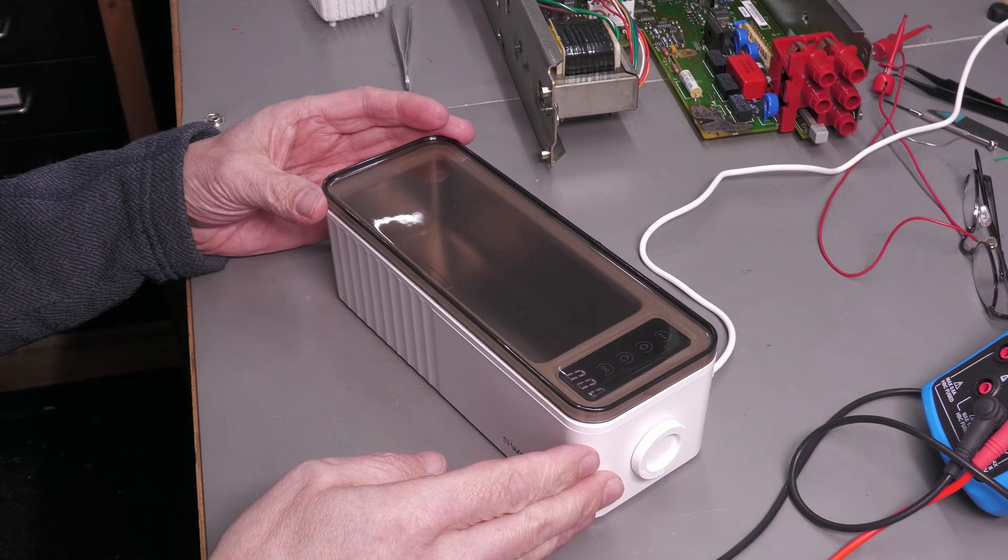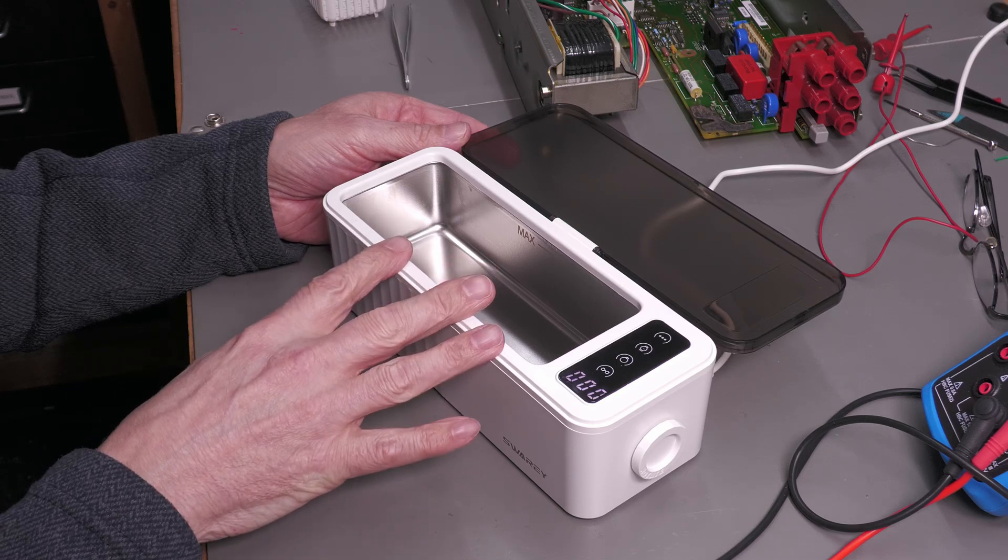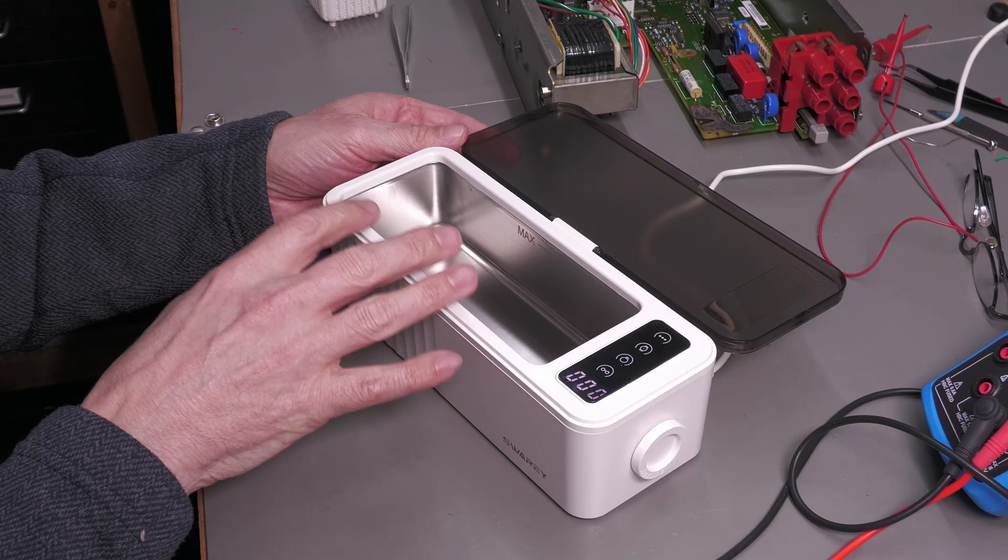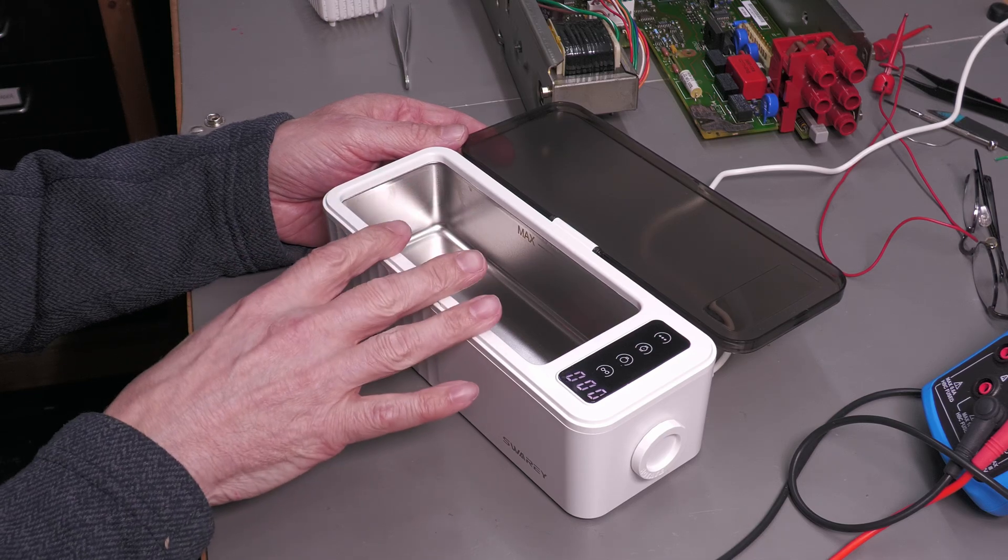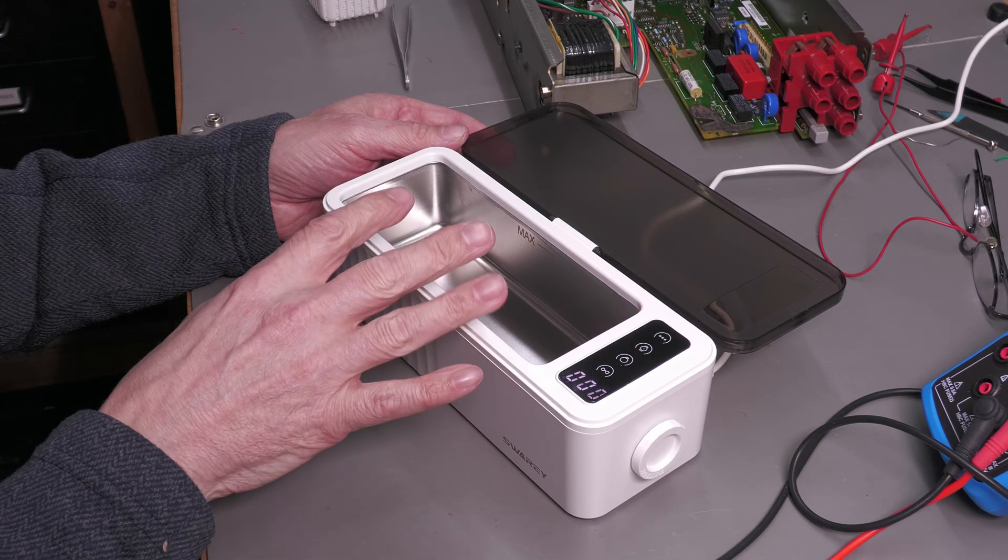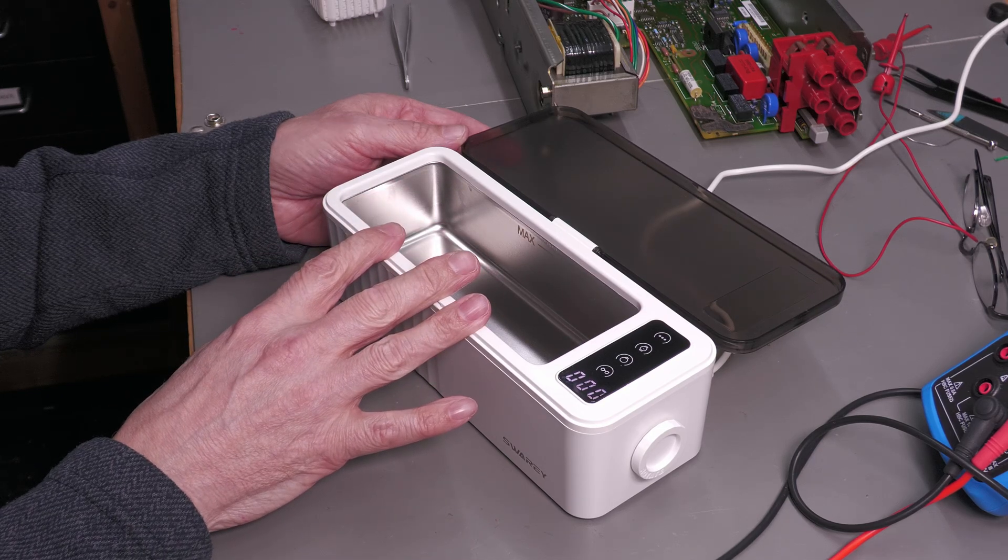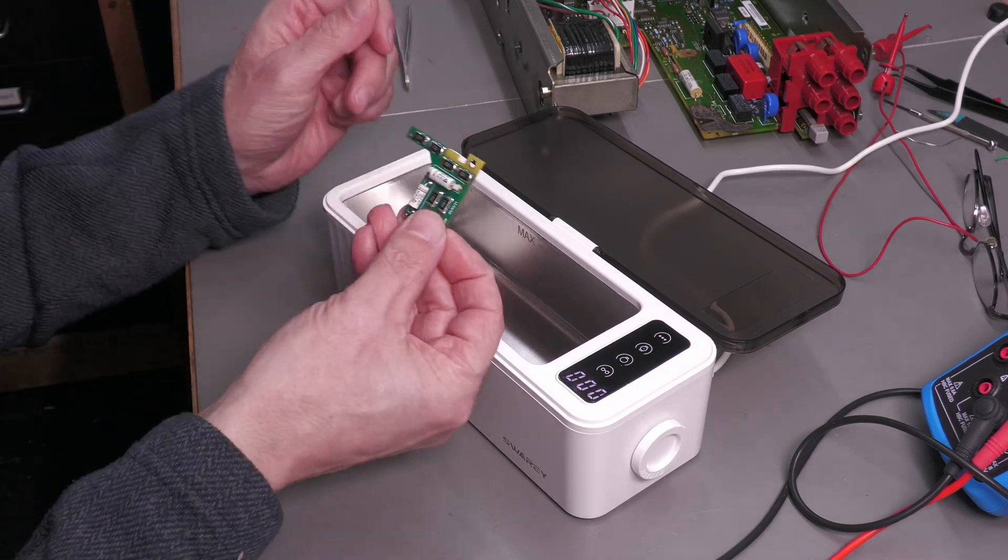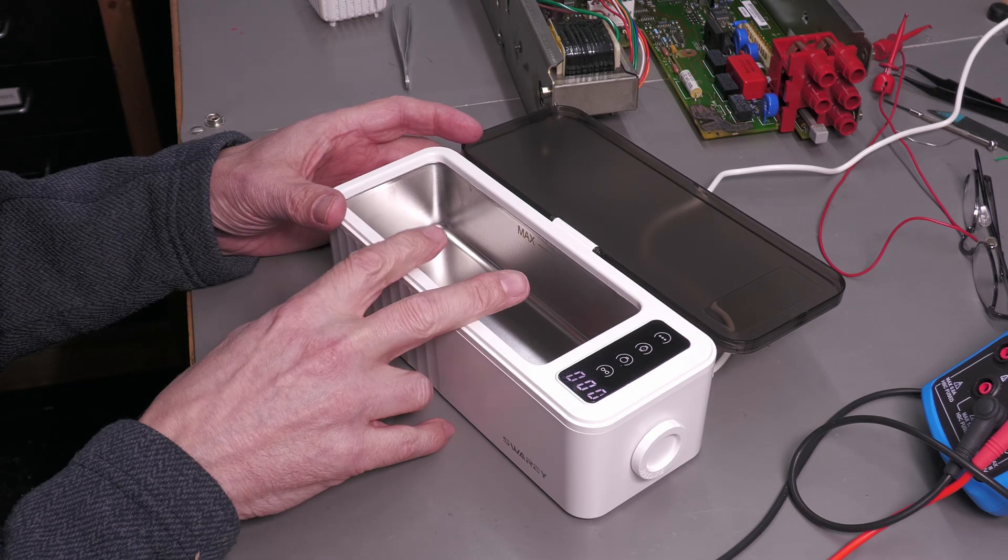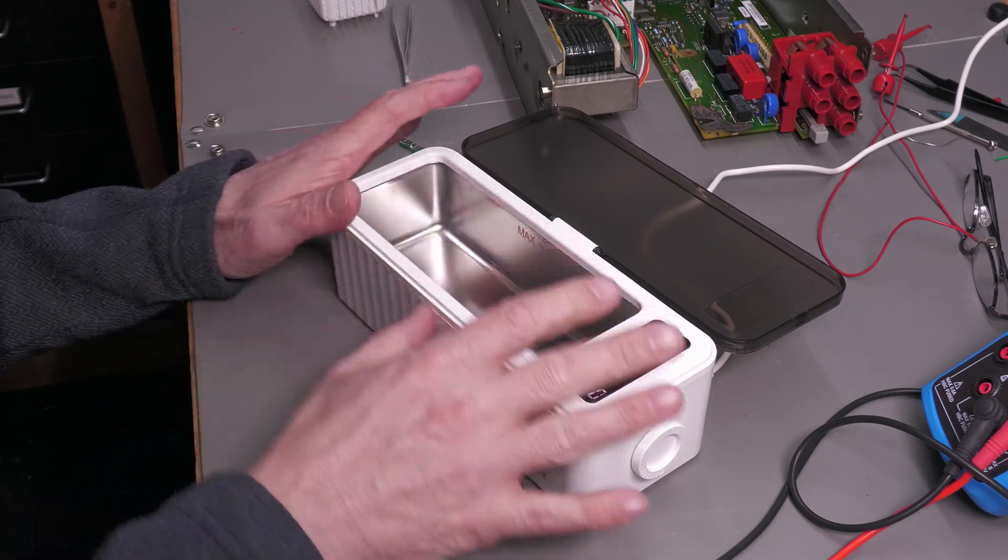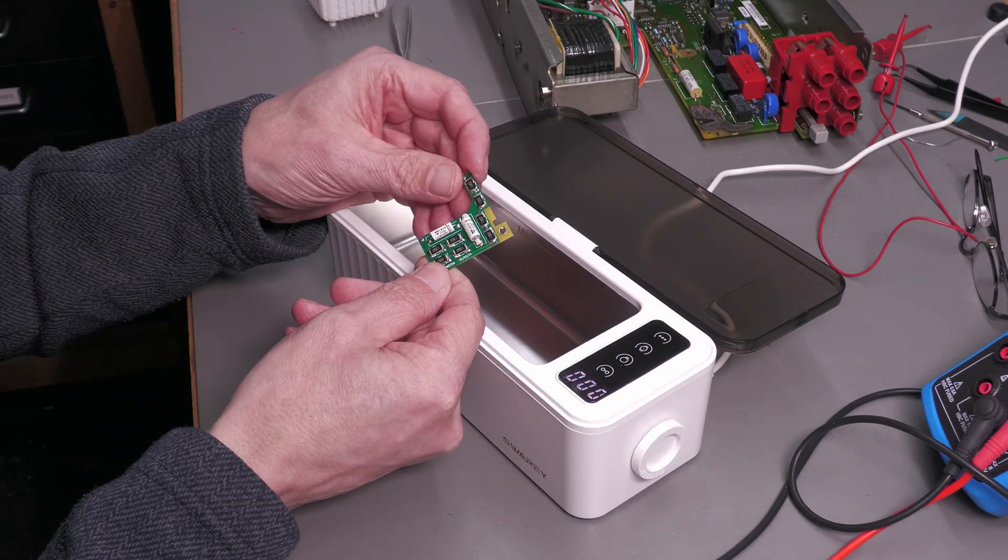And here is my ultrasonic cleaner. No, it's not the big one that I normally use. This one is just a cheap and cheerful one used to clean watches, spectacles, that sort of thing. It doesn't have a heater and it's pretty low power, but it will work because I have tried it before and it does take flux off of PCBs. It'll be ideal for my little PCB here. I'm actually going to put IPA in it. It's safe to do that when it doesn't have a heater and just a couple of minutes should clean off the board, no problem.